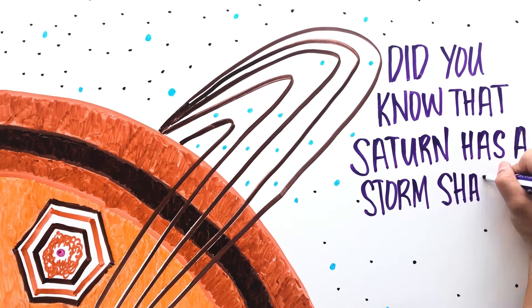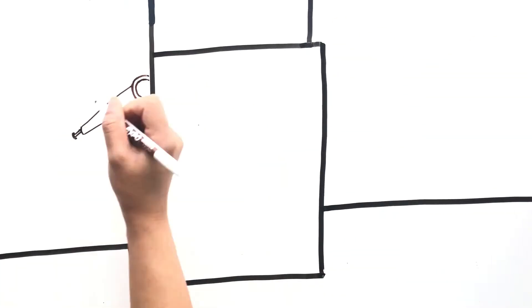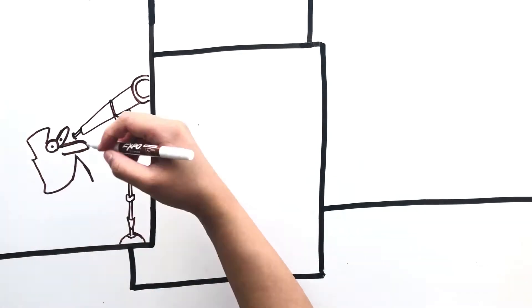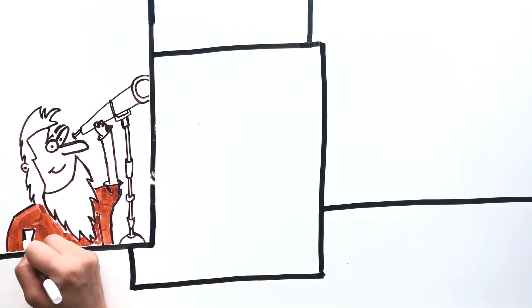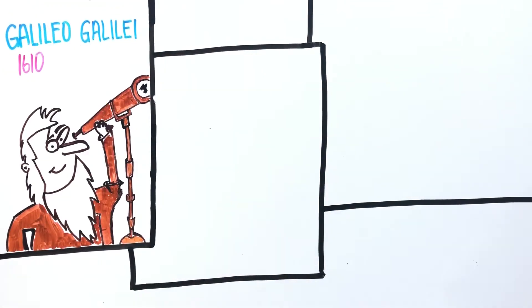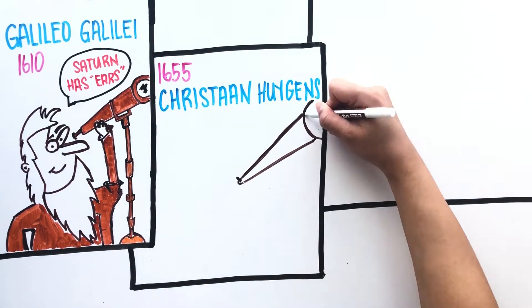Did you know that Saturn has a storm shaped like a hexagon? The sixth planet from the Sun and the most distant planet that can be seen with the naked eye was discovered by Galileo Galilei in 1610. At the time he didn't know what he was seeing and wrote that Saturn has ears.